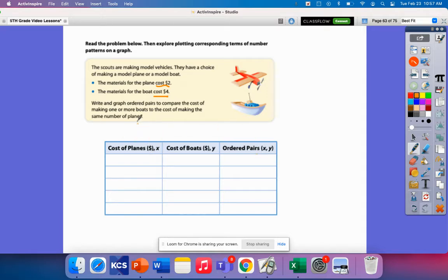So I'm just going to be focusing on the pattern. So cost of a plane, if I made zero planes, it costs $0, right? So if I put those two values together, I would have zero and zero, my X and Y. So cost of a plane to make one would be $2, two would be four, three would be six, and then four would be $8. So because I'm just multiplying by two here.